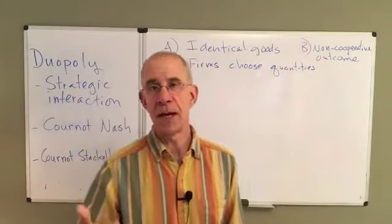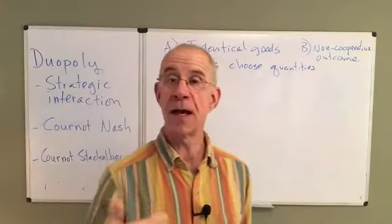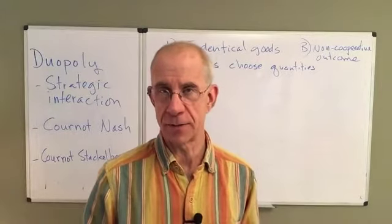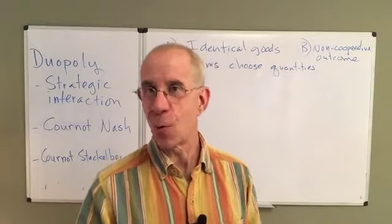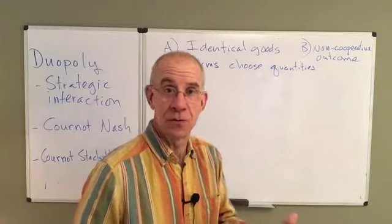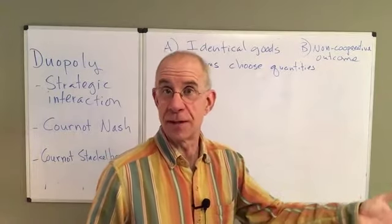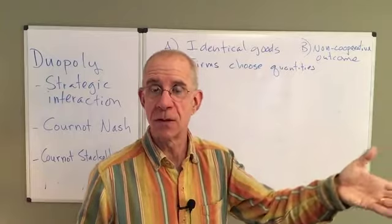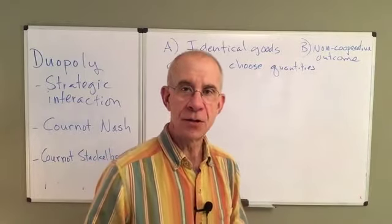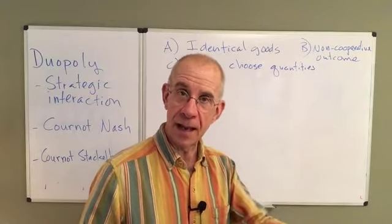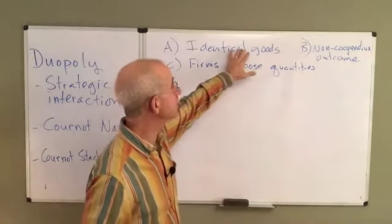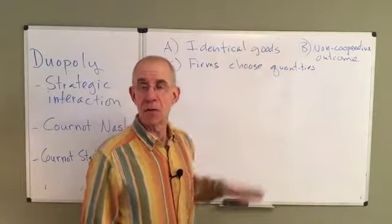Cournot behavior is one in which firms decide how much to produce, and then they let the prices adjust in the marketplace. A firm can't choose both price and quantity — we saw this with the monopoly. You could choose the output, but then you have to deal with the demand of consumers in terms of the price. So in this case, we're going to let firms make a decision about how much they produce and let prices adjust. We're going to do this in the context of identical goods.